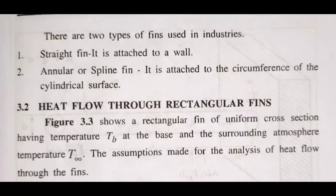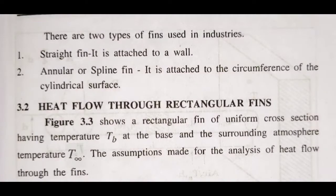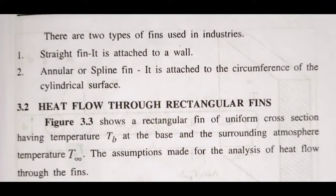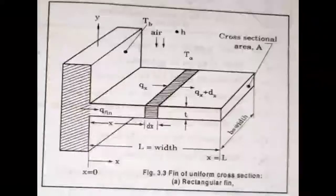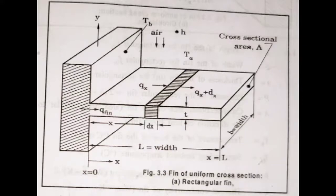The first case is that the fin is infinitely long. The second case uses a short fin with an insulated end. The third case also involves a short fin with an insulated end. Now let's look at the figure — fin of uniform cross-section, i.e., rectangular fin. Assumptions are stated here.